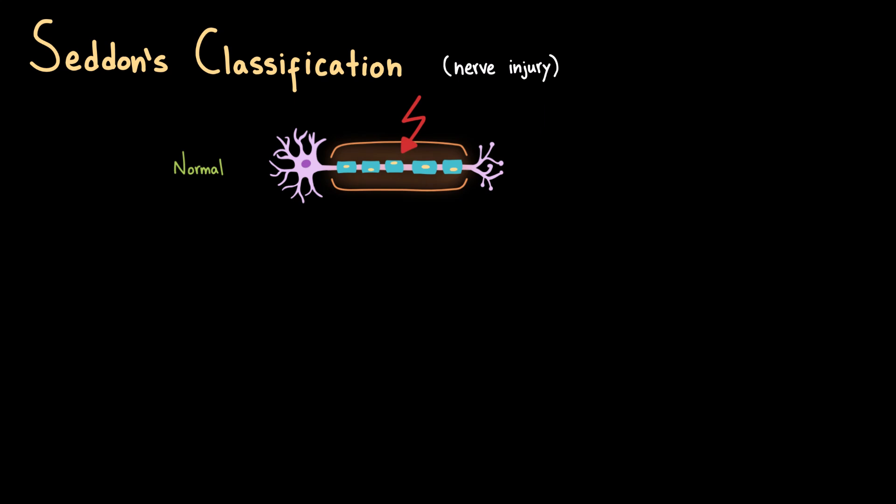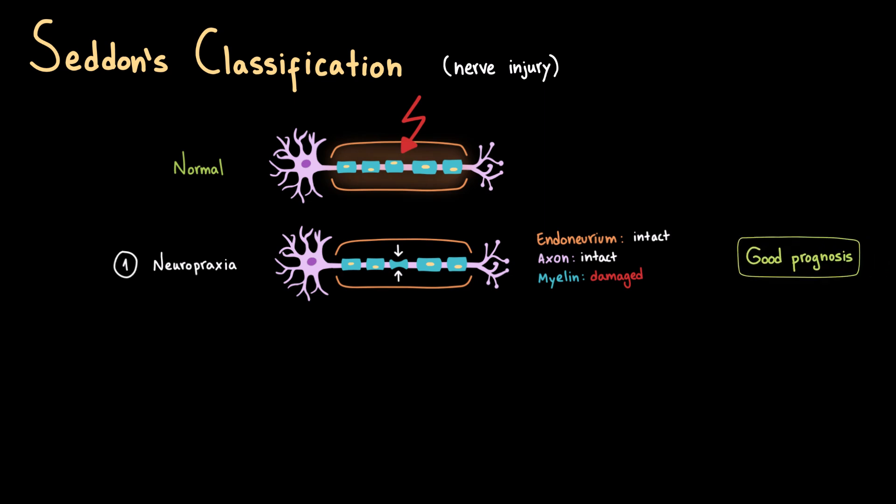So, here we start with a normal healthy neuron that has been injured. The first level is neuropraxia. This is the mildest type of injury. In neuropraxia, the endoneurium remains intact, the axon remains intact, but there is some damage to the myelin sheath, leading to a temporary conduction block. This often happens with compression injuries. The good news? Recovery is usually complete and fairly quick, often within days to weeks once the compression is relieved.